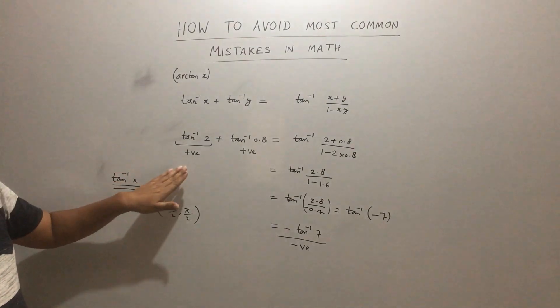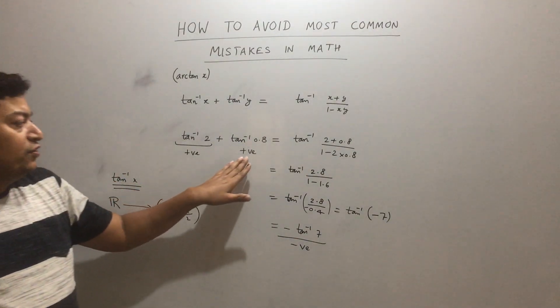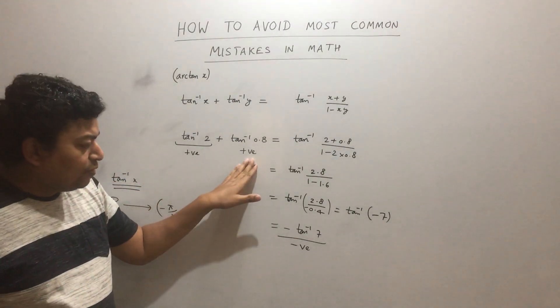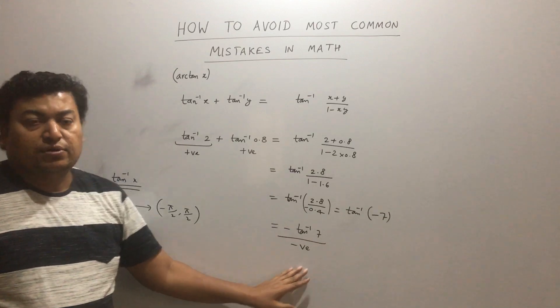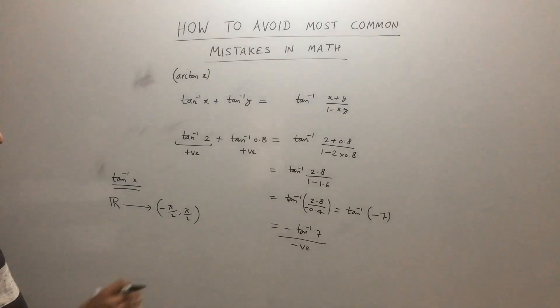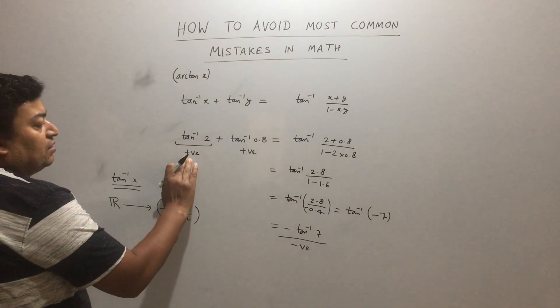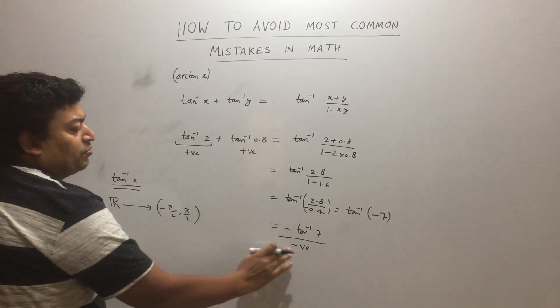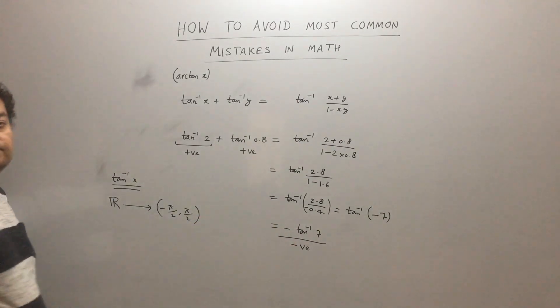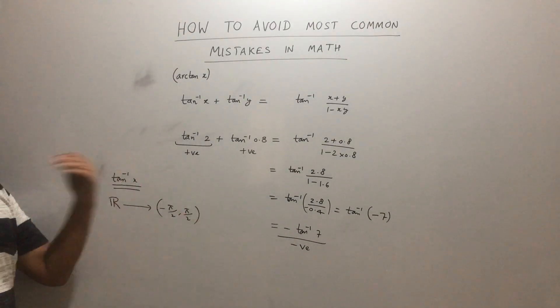tan⁻¹(2) is positive, tan⁻¹(0.8) is positive, but -tan⁻¹(7) will be a negative number. It is very obvious to understand that the sum of 2 positive numbers cannot be negative — so this answer is wrong.